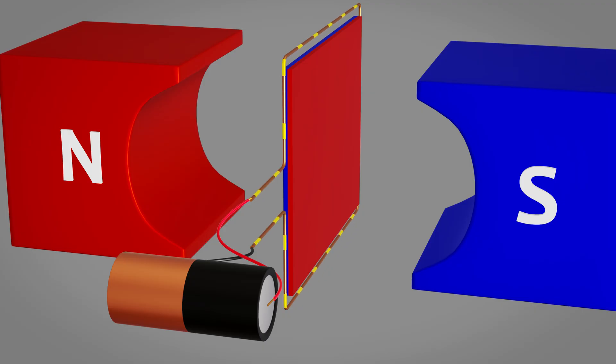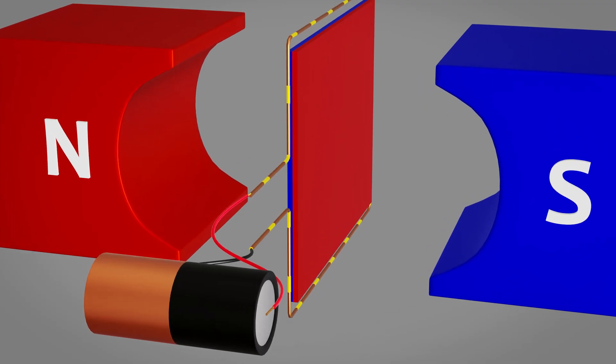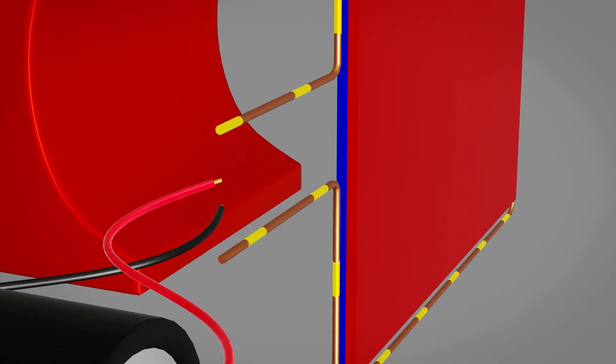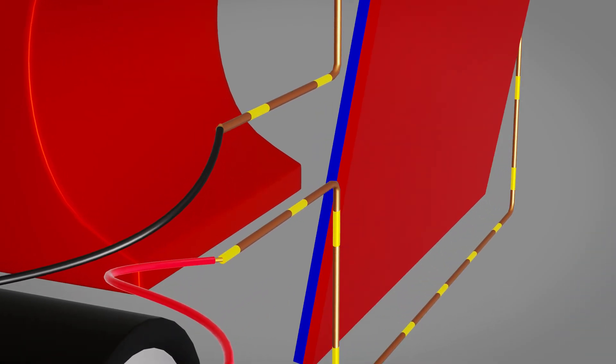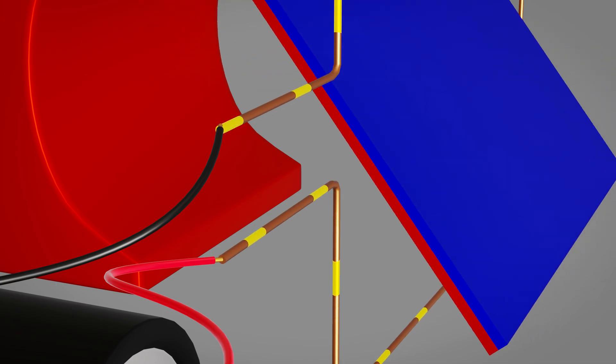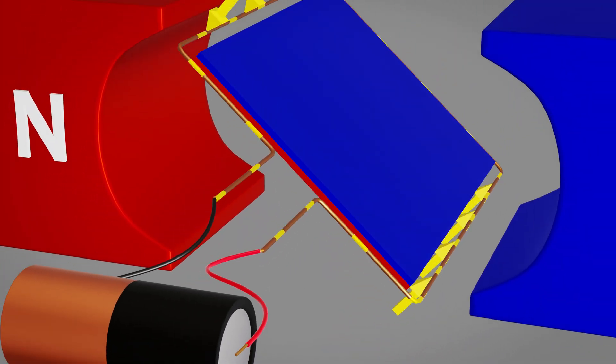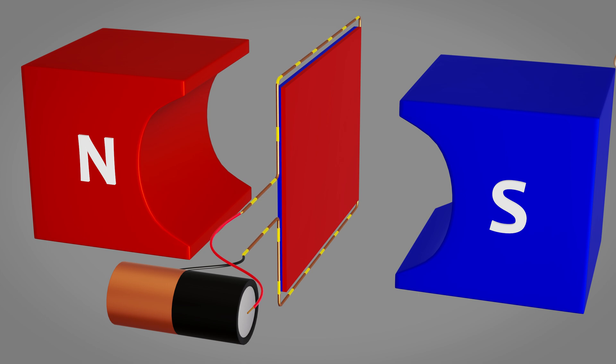We can't manually flip wires thousands of times per minute. Another method involves changing the connections to the armature coil itself rather than the entire battery. By reversing which end of the coil connects to positive and which connects to negative, we achieve the same current reversal effect. This approach is commonly used in DC motor control circuits, but again, doing this manually at high speeds is impossible. What we really need is an automatic mechanism that can reverse the current direction in the coil precisely when it reaches the dead-center position, without any manual intervention. This switching must happen quickly and reliably, potentially thousands of times per minute as the motor spins at high speed.